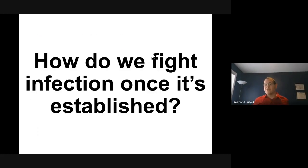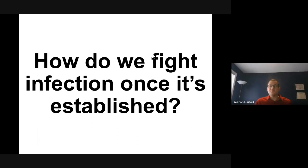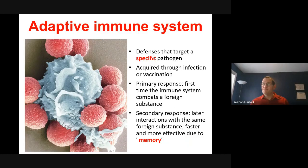The innate immune system is super powerful, but eventually you get to the point where the infection is here and we have run out of tools to just regularly fight it. We need something new — we need to hyper-evolve something against a single pathogen we've never seen before. And that was the birth of the adaptive immune system.